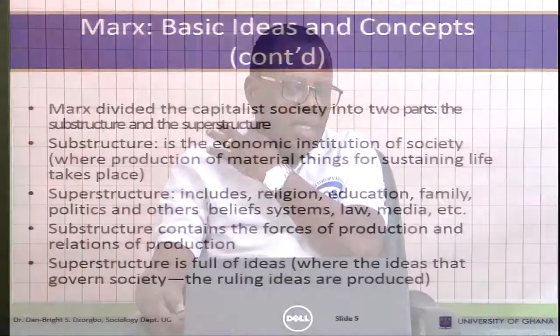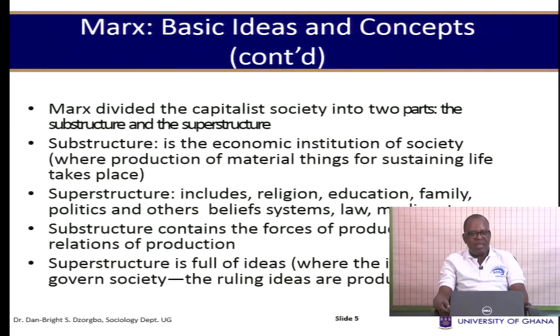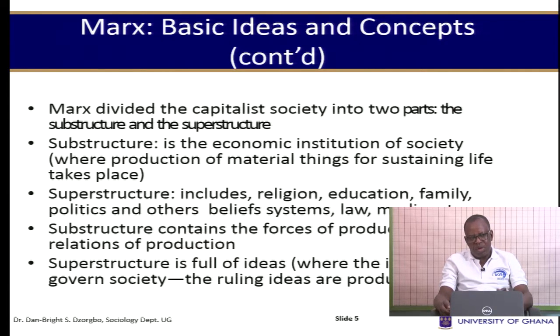Marx divided society into two basic parts: the substructure and the superstructure. For Marxist sociologists, we think of society as having these two components. The substructure is basically the economic institution of society — the institution in which we engage in material production for sustaining our lives. When we produce things in the economy, that is where we get our food, shelter, clothing, and all that. Marx says we must eat first before we think, so eating is more important than thinking at this level.